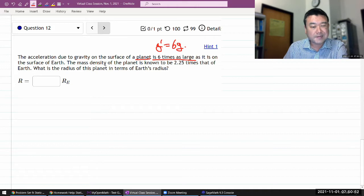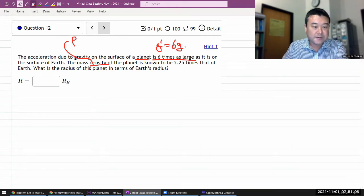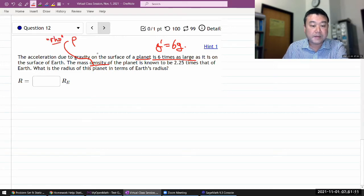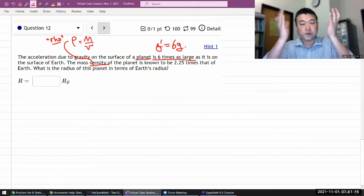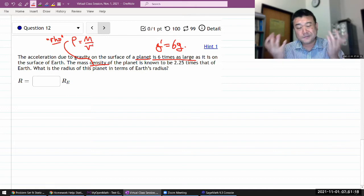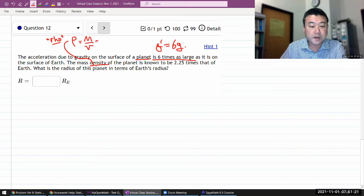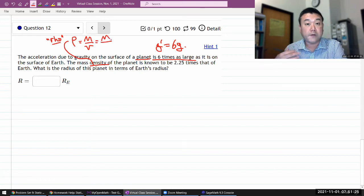It also says the mass density of the planet. Density is something that we haven't covered properly. We use the Greek letter rho. What density means is it's mass per volume. So for a spherical object, if you assume it's a uniform sphere, it would be mass divided by the volume of a sphere, which is four thirds pi r cubed.